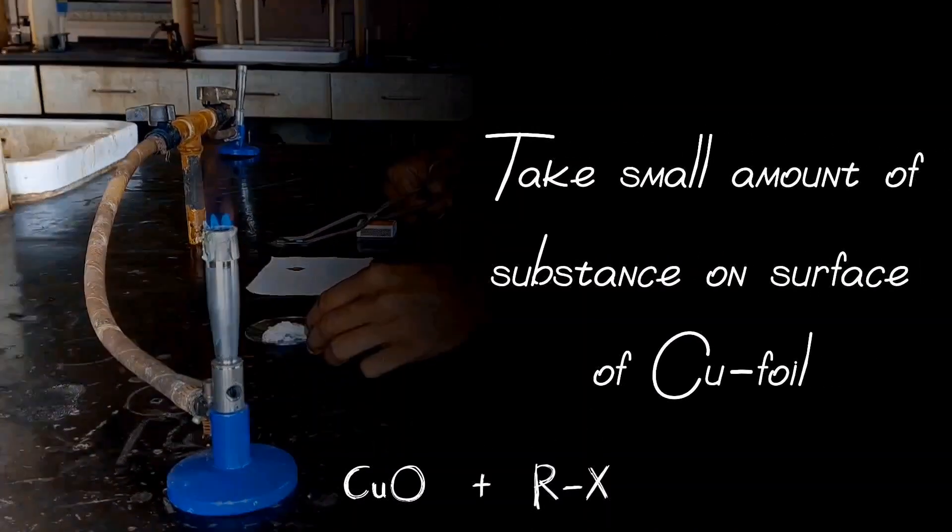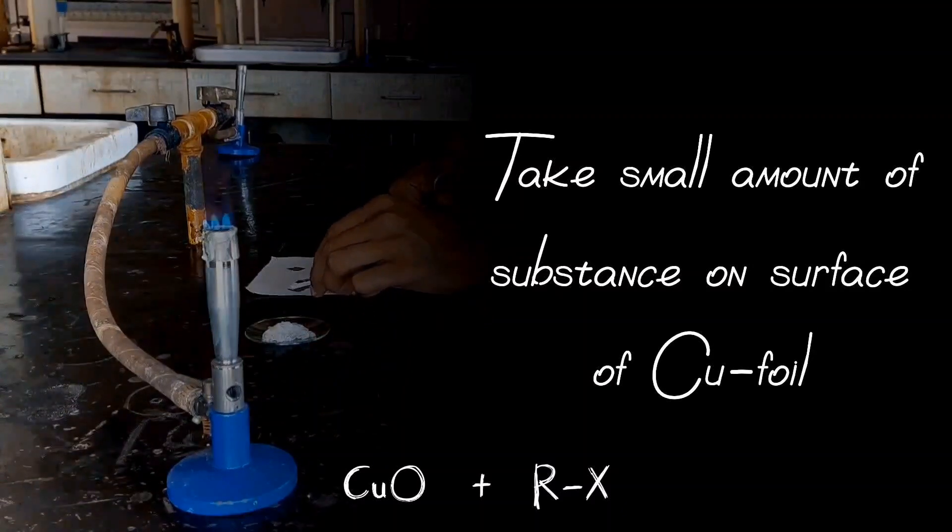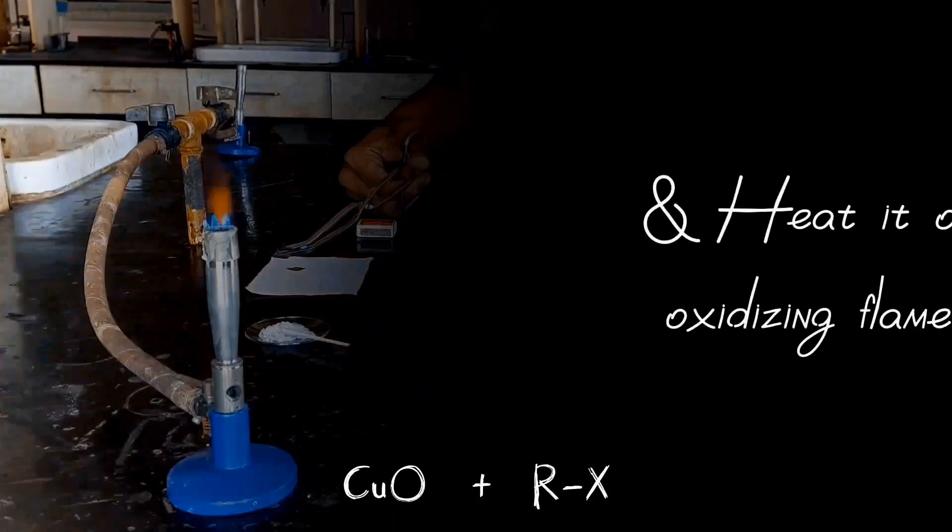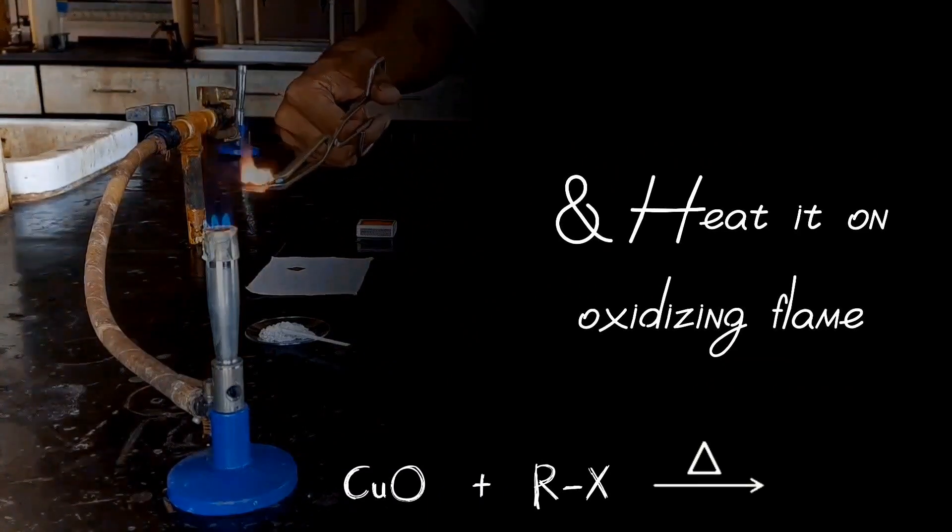Now take small amount of substance on surface of copper foil and heat it on oxidizing flame.